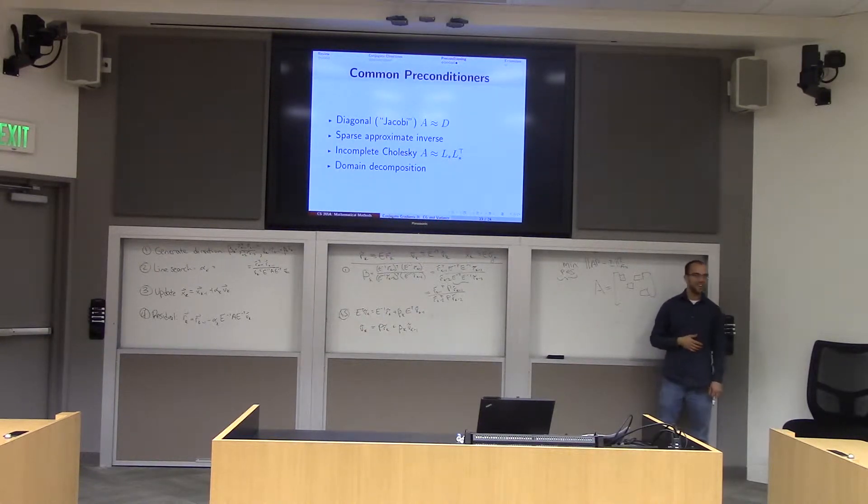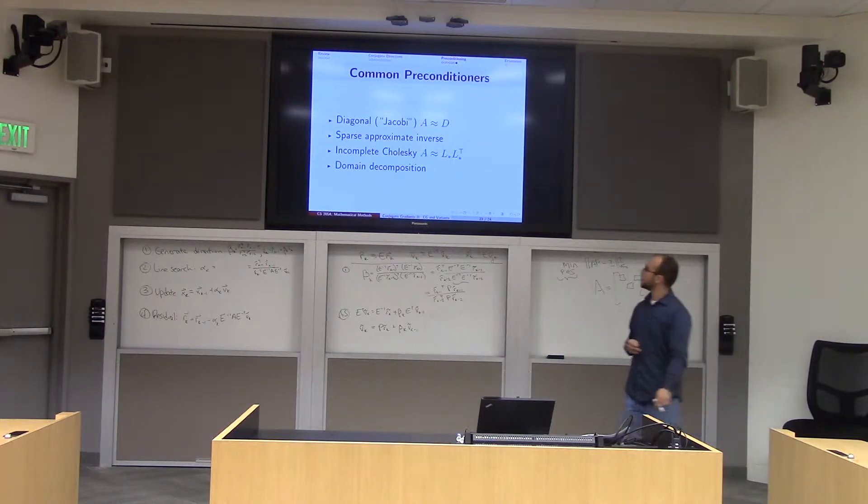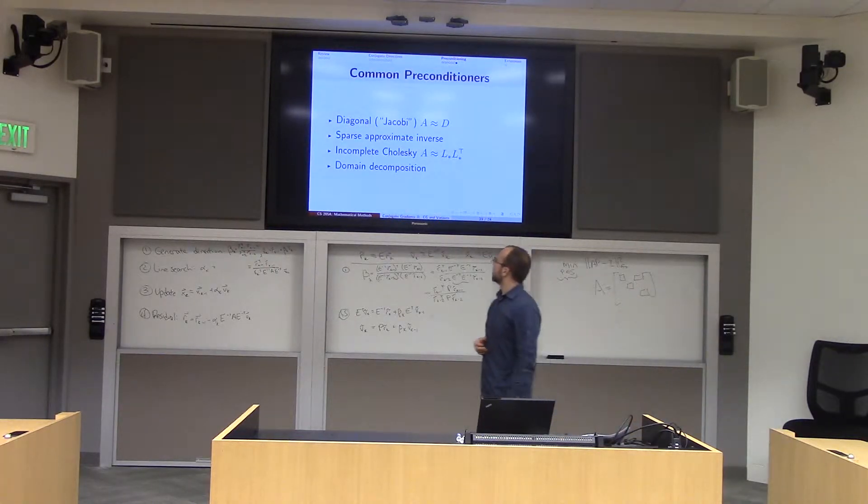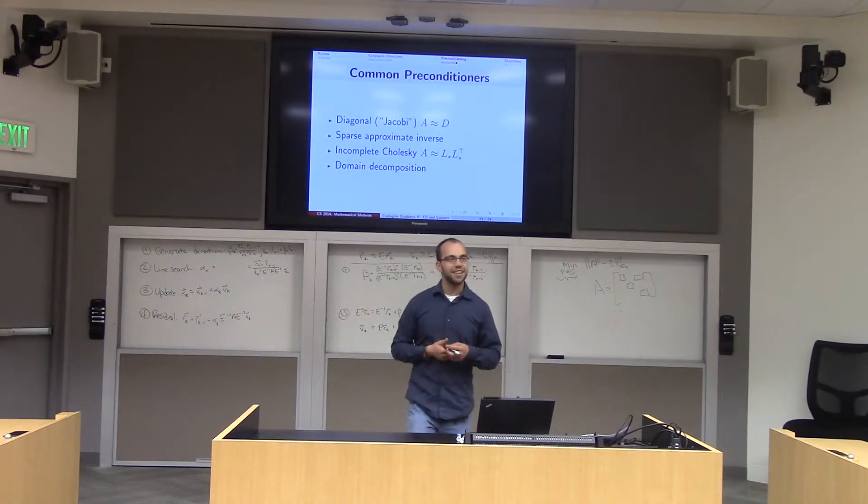It's kind of tricky, yeah, it's actually very clever. The third one is a method called incomplete Cholesky factorization, and this is a little bit magic.